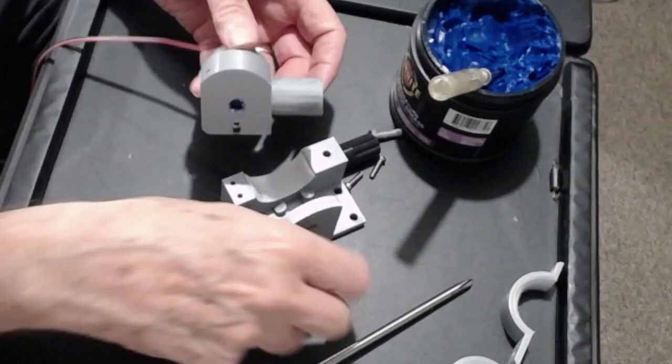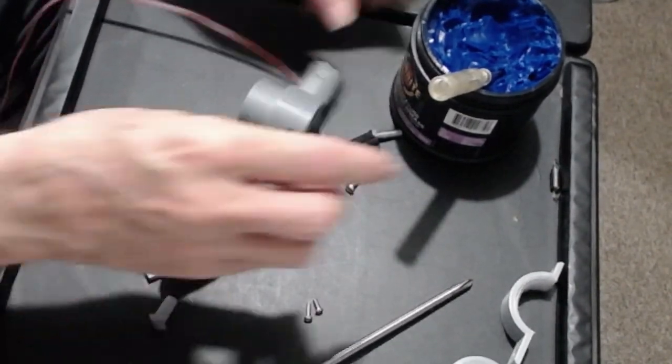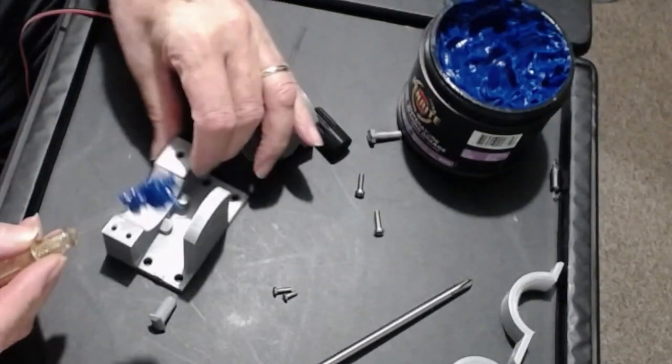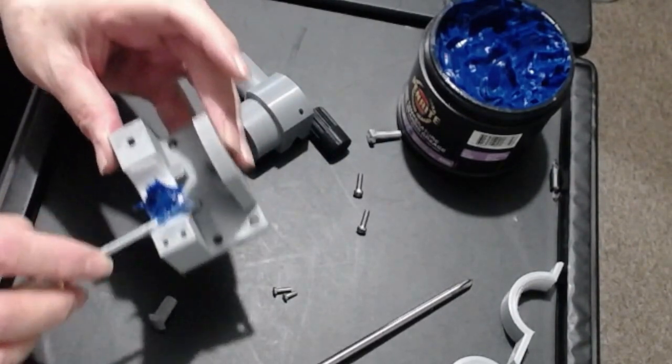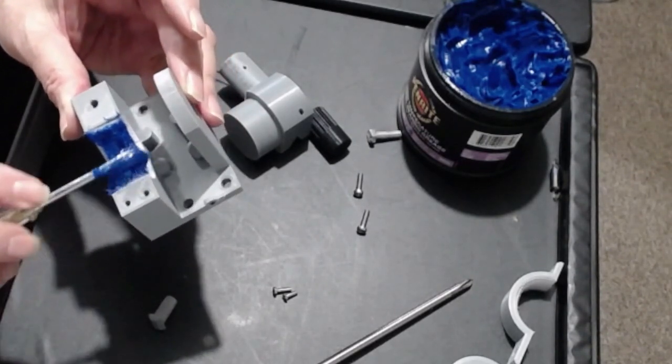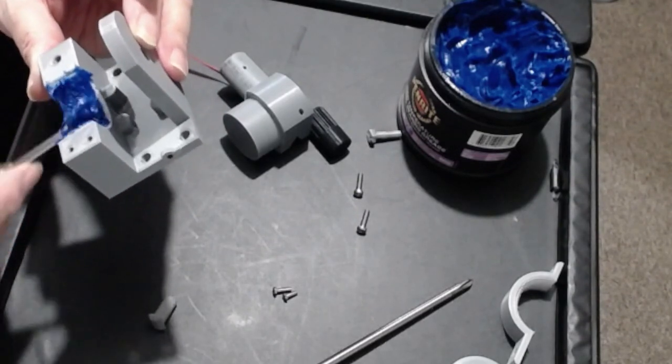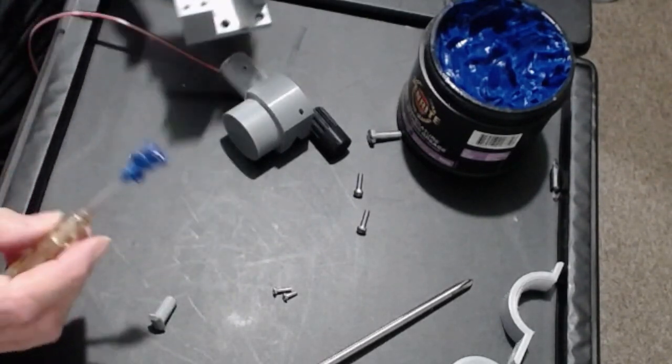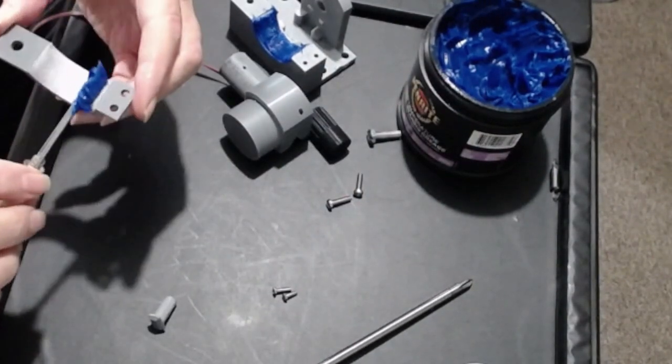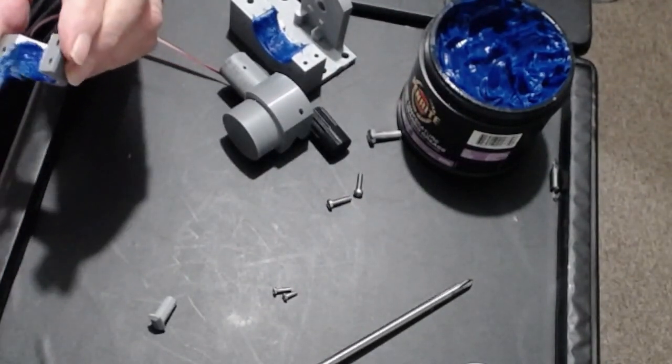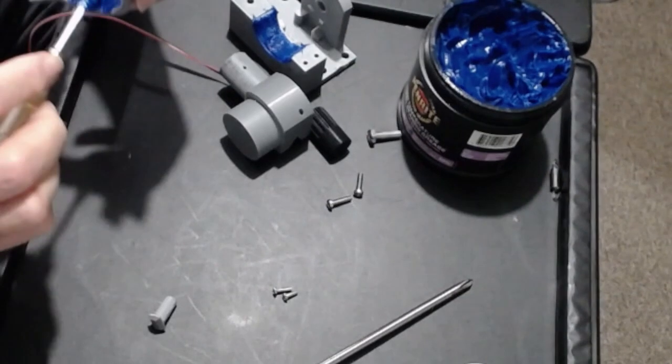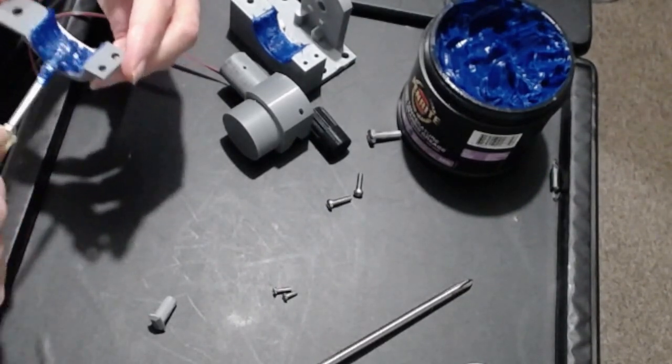Once we've got that grease in there, we can put it aside and take some more grease. This time we want to be fairly generous with the grease and we want to put it into the velcro. I want to liberally coat that velcro inside there with grease. We do the same in the shoe, giving it a liberal coating of grease as well. Of course you can always do it more later if it's not enough.